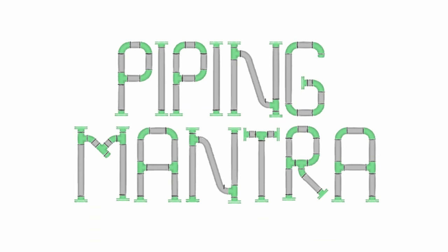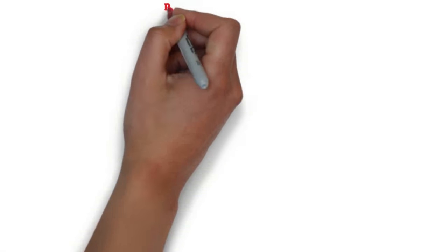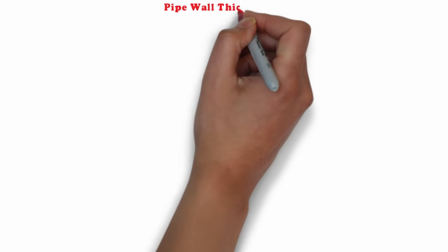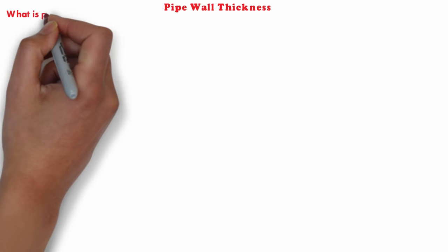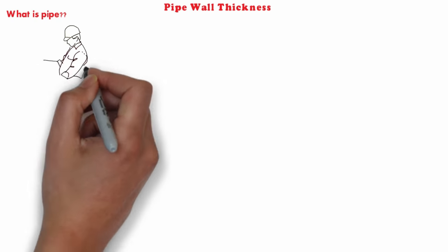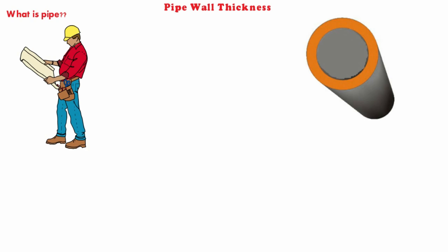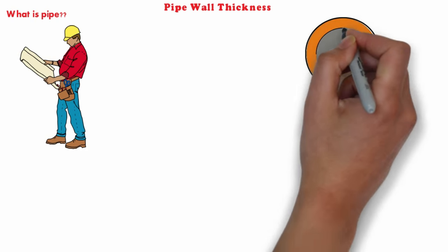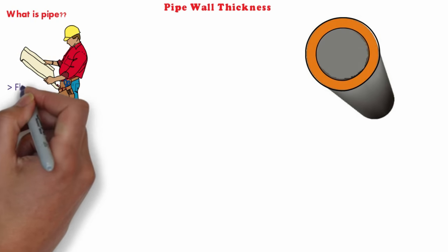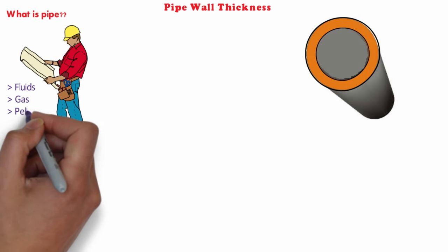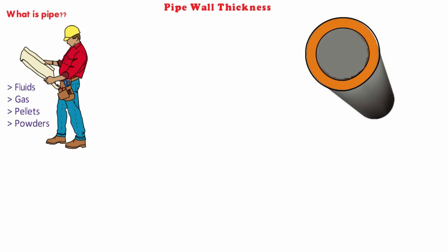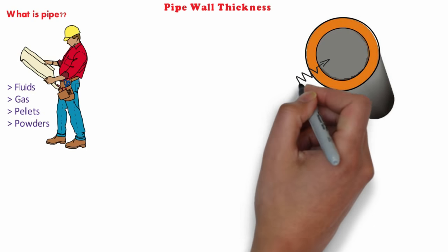Hello friends, welcome to our channel Piping Mantra. Today we are going to discuss pipe thickness - how to calculate it, its importance, affecting factors, etc. First, we need to know exactly what a pipe is. In layman terms, a pipe is a hollow tube with round cross-section for the conveyance of products like fluids, gas, pellets, powders and more. A pipe is a pressure-tight cylinder used to transport fluids.